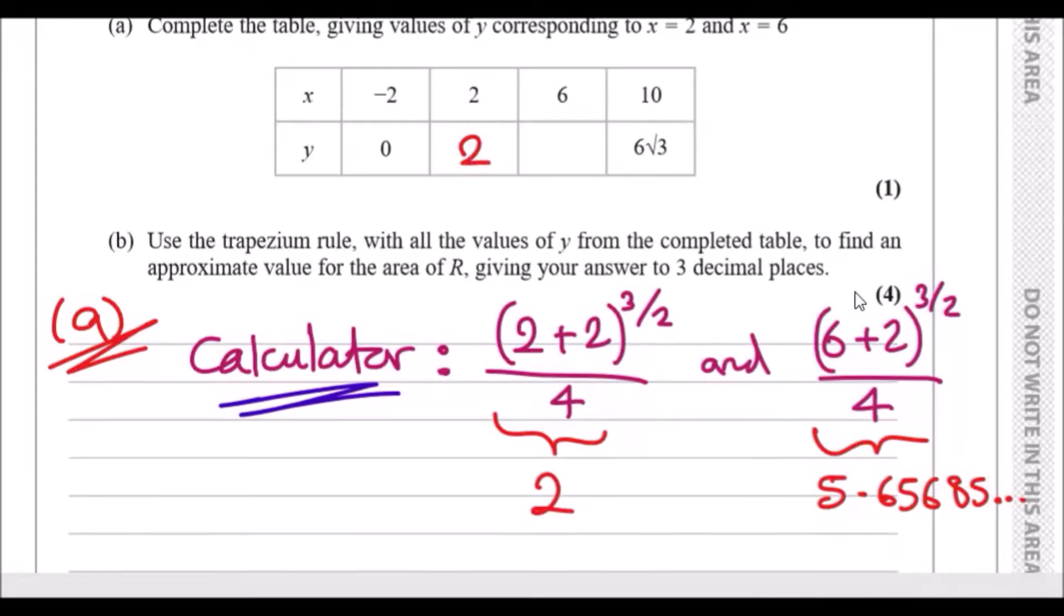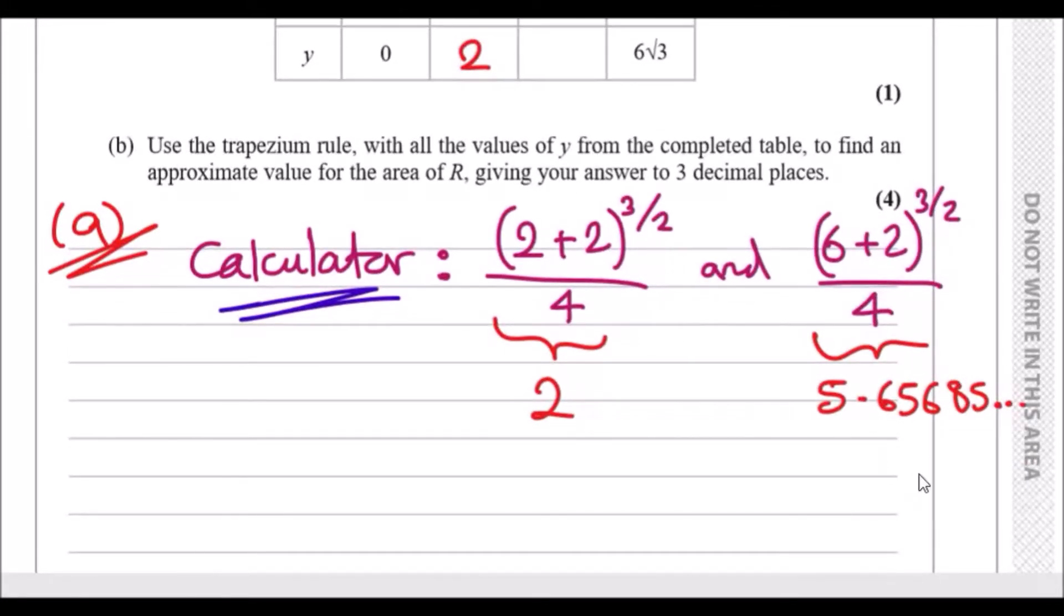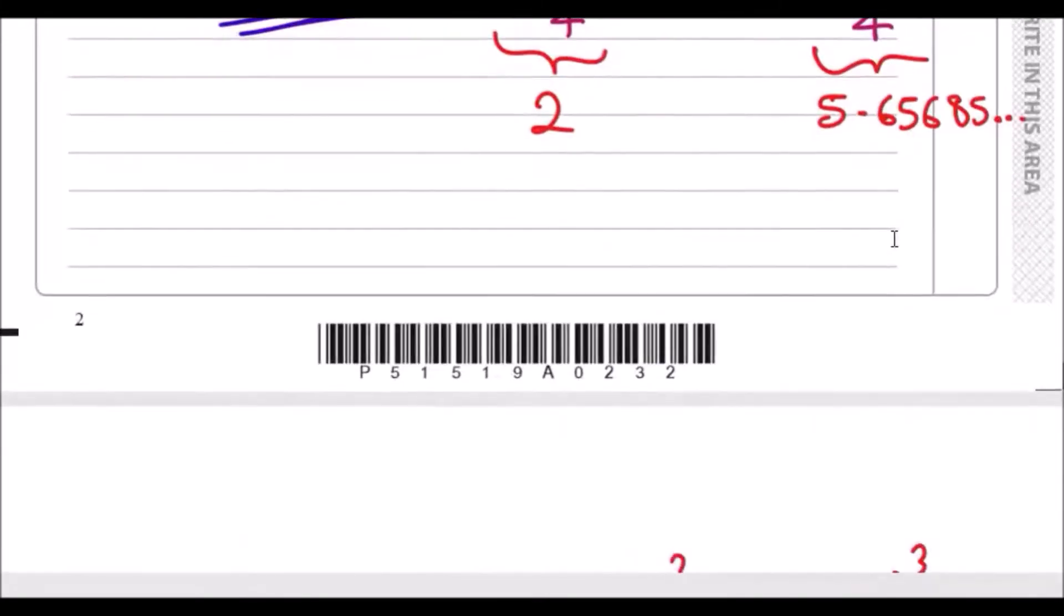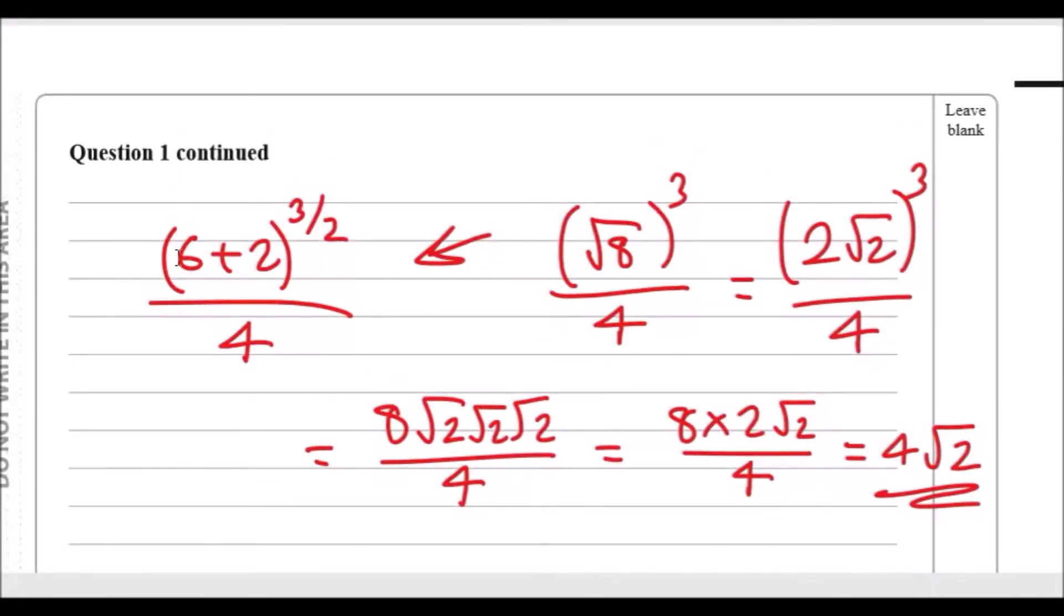But when x is 6, you end up getting a non-recurring decimal, which means it's probably best to evaluate it separately. So 6 + 2 is 8, and then in the calculator I just took the square root value and wrote root 8. Let me convert root 8 in my calculator: plug this in and you should get 2√2. Then cube each term, so the cube of 2 is 8, and the cube of √2, I just wrote it as three consecutive root 2s.